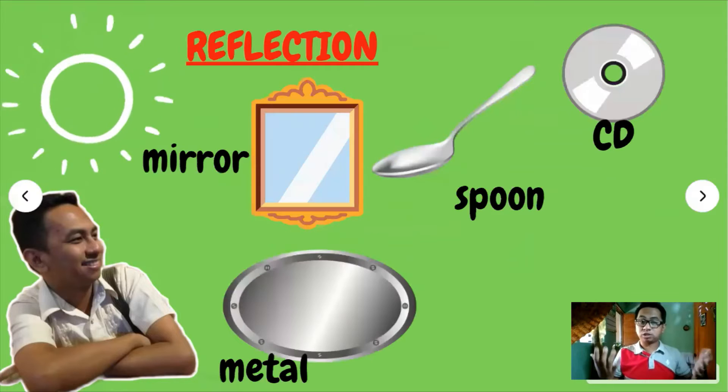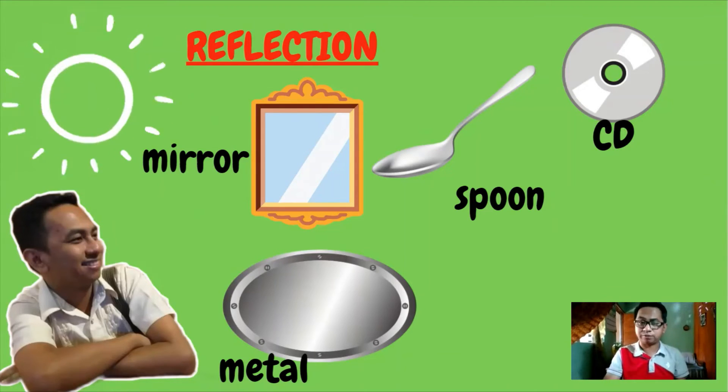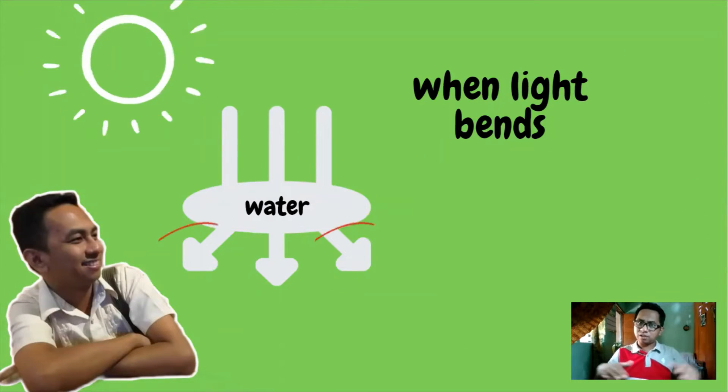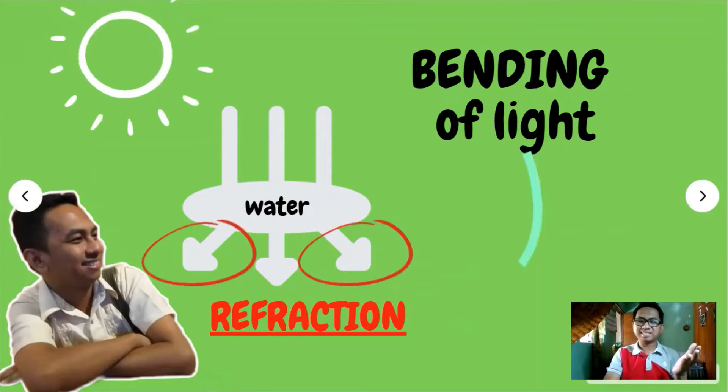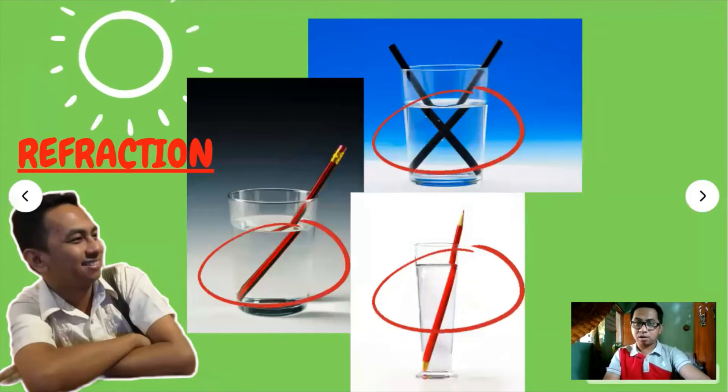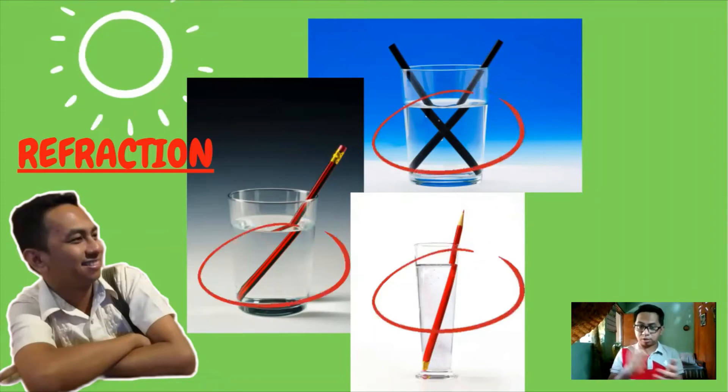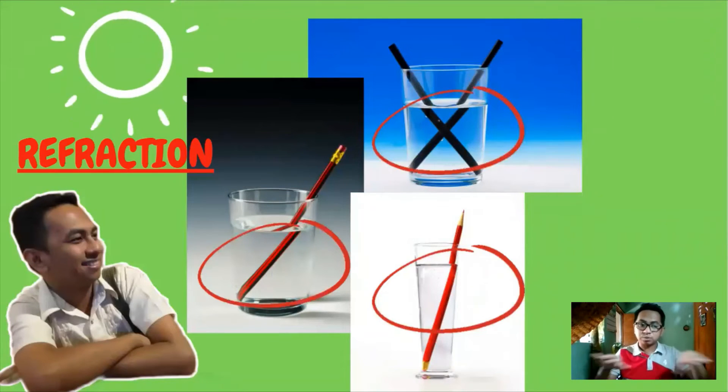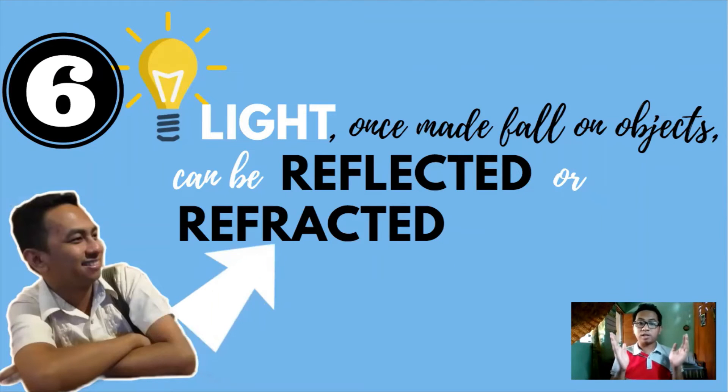Light bounces back when made to fall on polished objects or surfaces. That bouncing of light is called reflection. Examples of objects which light can be reflected are mirror, spoon, compact disc or CD, and other shiny or metal surfaces. But when the light bends and changes its speed when it travels from one transparent medium or object, it is described as refraction. Examples of refraction are observed in these pictures. Objects that soak in water is just a representation of light which can be bent once it strikes a transparent object like water. For our sixth characteristic of light, light once made fall on objects can be reflected or refracted.